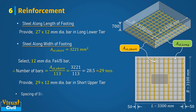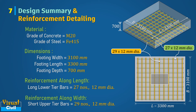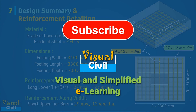Finally, let us summarize the design and reinforcement detailing. An axially loaded isolated pad footing is designed with M20 grade of concrete and Fe415 steel. The width of footing is 3100 mm, length is 3300 mm, and depth is 700 mm. 27 numbers of 12 mm diameter bars are provided in the long lower tier, and 29 numbers of 12 mm diameter bars are provided in the short upper tier. If you like this video, share your thoughts in the comment section, subscribe to this channel and press the bell icon to get notifications of such interesting videos for visual and simplified learning of various civil engineering topics.